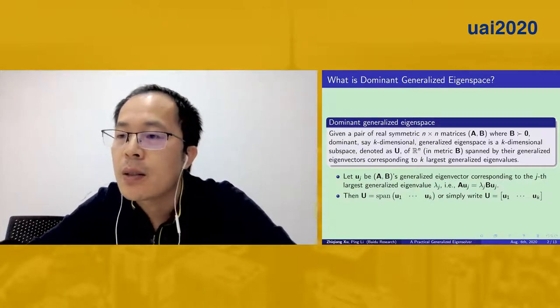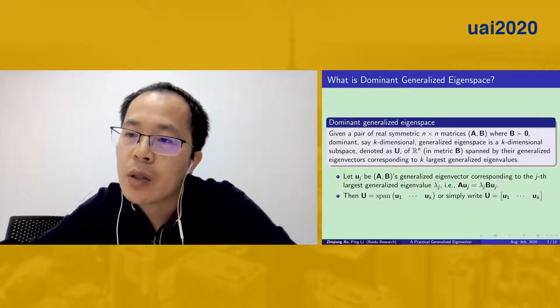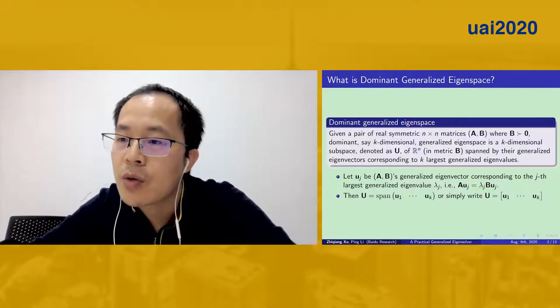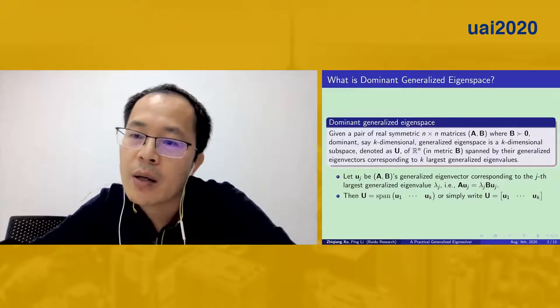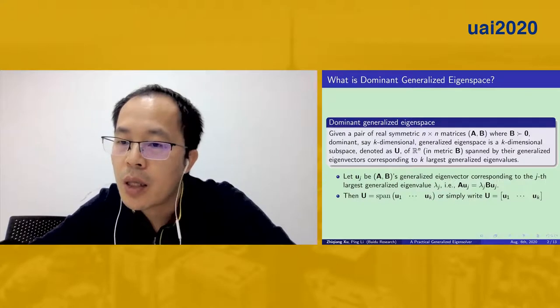This dominant k-dimensional generalized eigenspace is a k-dimensional subspace spanned by A's generalized eigenvectors corresponding to k's largest generalized eigenvalues. Uj is A's generalized eigenvector corresponding to the j-th largest generalized eigenvalue lambda j if they satisfy the equation here. The target eigenspace is spanned by U1 to Uk.